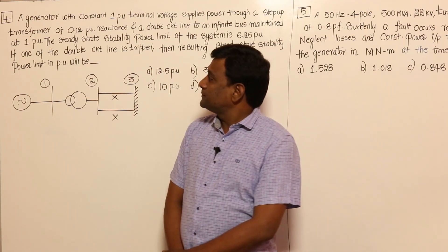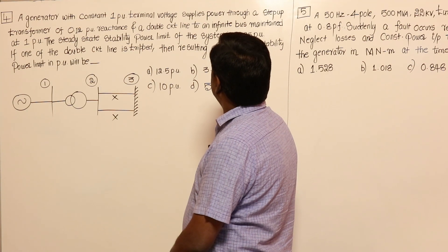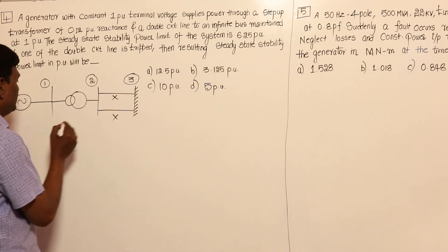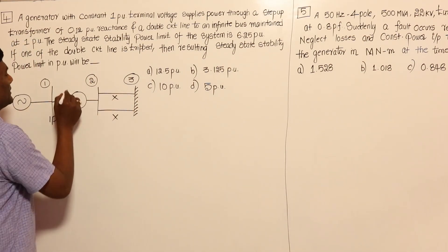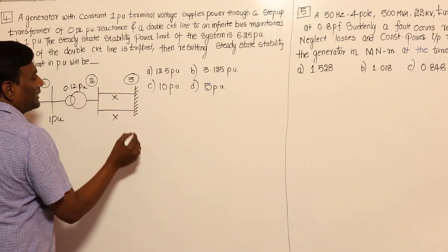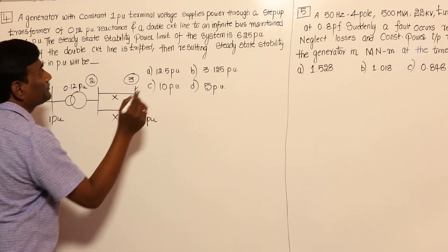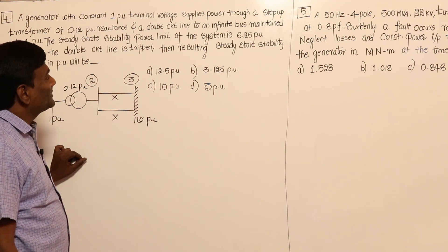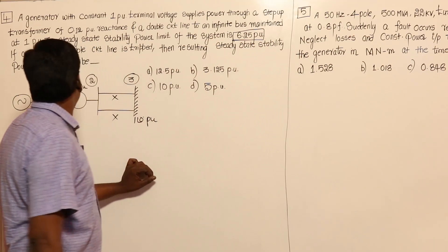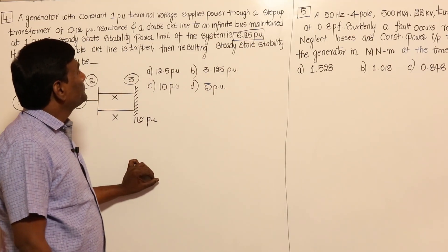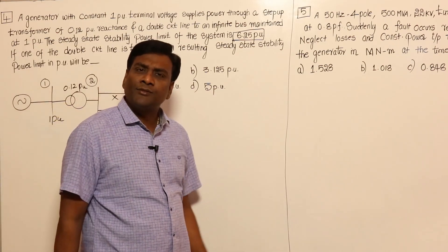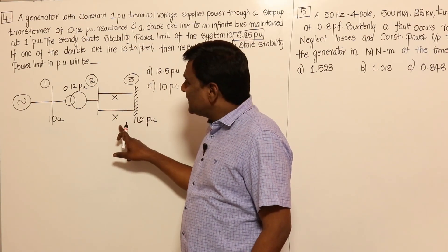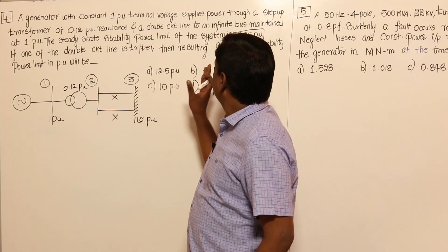In this session, a generator with constant 1 per unit terminal voltage supplies power through a step-up transformer of 0.12 per unit reactance, and through a double-circuit line, to an infinite bus maintained at 1 per unit. The steady state stability power limit of the system is 6.25 per unit. If one circuit of the double-circuit line is tripped, find the resulting steady state power limit.